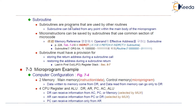Subroutines are programs that are used by other routines. When a routine is getting executed, it may require a subroutine to be executed. Then a call is made to that specific subroutine. Once after the subroutine gets executed, there will be a return made to the main routine from where the subroutine has been called. Subroutines can be called from any point within the main body of the micro-program. Micro-instructions can be saved by subroutines that use a common section of the micro-code.